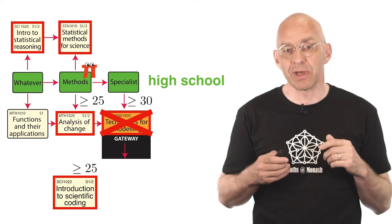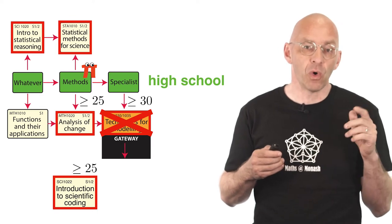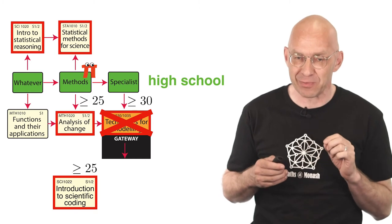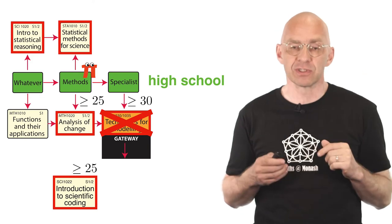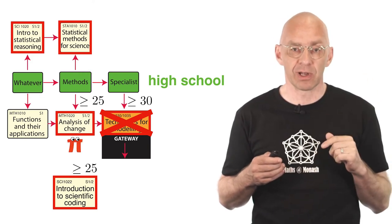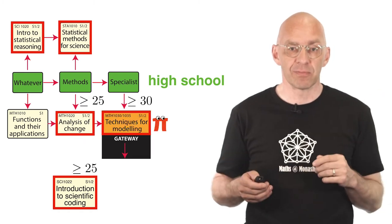For example, let's say you are in the methods box. Did pretty well in methods 3-4 and you want or need some higher level mathematics because you're aiming for a Nobel Prize in physics. Then you should enroll in the unit analysis of change in your first semester. Then in the orange gateway unit techniques for modeling in your second semester. And then continue with higher level maths units from there.